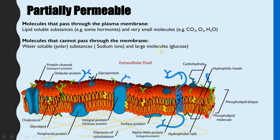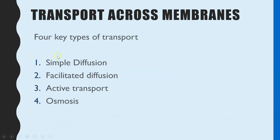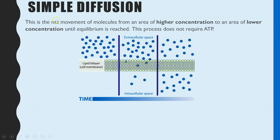Or if molecules are too large, like glucose, they also cannot simply diffuse through. So within this video we'll be looking at simple diffusion but also the other mechanisms for how molecules can transport from one side of a membrane to another, whether that is from outside a cell into the center, or from the cytoplasm into an organelle. The first type is simple diffusion, which is the net movement of molecules from an area of higher concentration to an area of lower concentration, continuing until equilibrium is reached, and this process doesn't require any ATP.